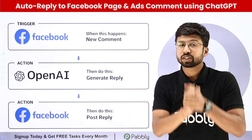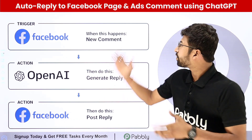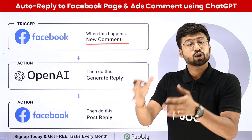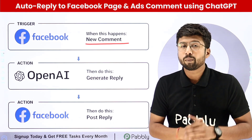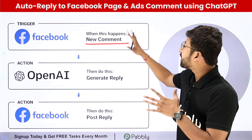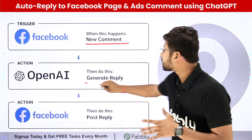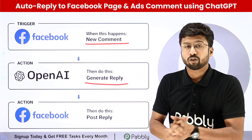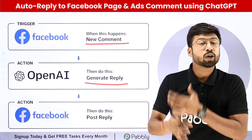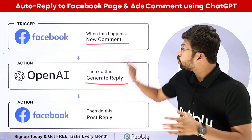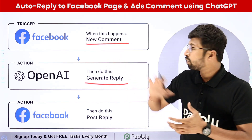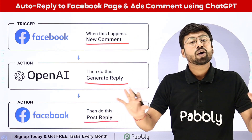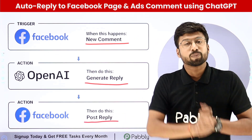In this automation, we are going to see how you can receive a new comment on your Facebook page post or your Facebook page ads. After receiving the comment, you can automatically generate a reply using OpenAI's ChatGPT or any other AI platform, and immediately post that reply back to the same comment. You can completely automate this process.